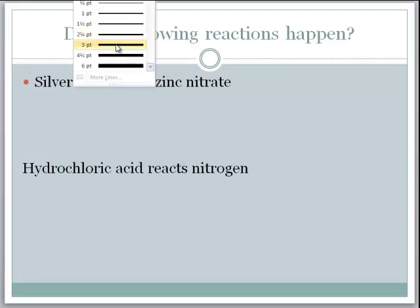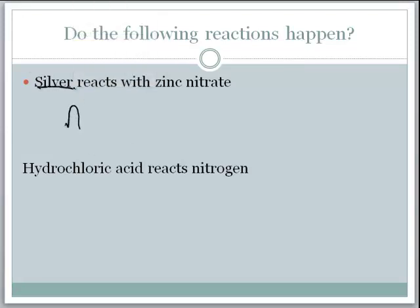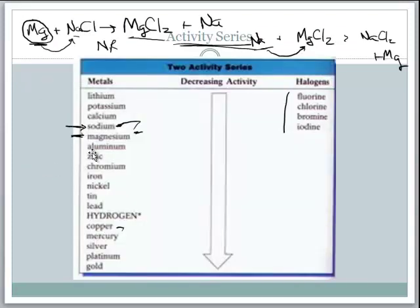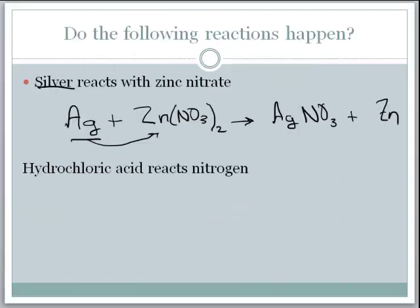Next: silver reacting with zinc nitrate. The products would be silver nitrate and zinc. We have to check if silver is higher than zinc on the activity series. Silver is way down on the activity series while zinc is much higher, so zinc is higher than silver. That means this reaction would not happen — no reaction.